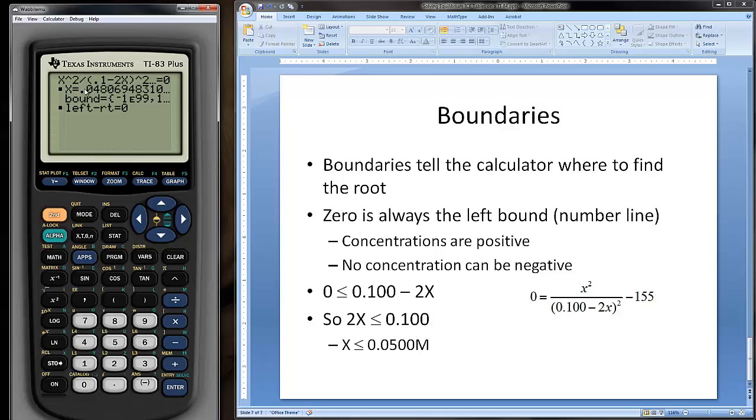Sometimes, that doesn't work. Sometimes, starting at zero will cause it to find a negative root because many times equations will also have negative roots. If this happens to you, the thing that you need to do is look at this bound. The bound, using the number line concept, is the lowest possible value for X. So, if I scoot over here and plug in zero and delete the rest of this and hit enter, and then go back up here and type in zero, I go alpha solve, it'll automatically search starting at zero.